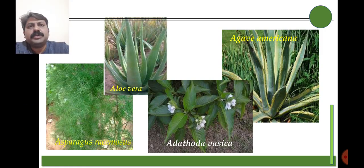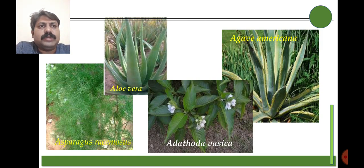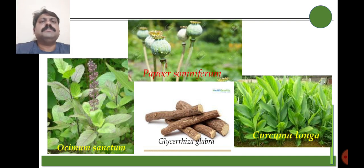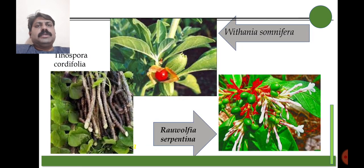Plant species commonly used as sources of medicine include Aloe vera — commonly used as a hair tonic — Adhatoda vasica — used in the preparation of cough syrup — Asparagus racemosus, Agave americana, Ocimum sanctum, Papaver somniferum — that is opium — Glycyrrhiza glabra — that is licorice — and Curcuma longa — that is turmeric. These are some of the species that have medicinal properties.